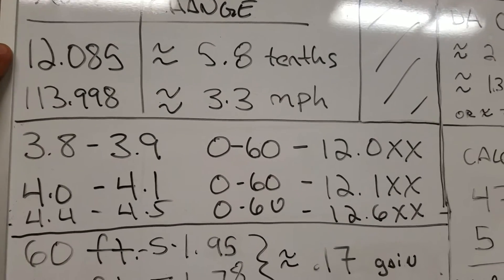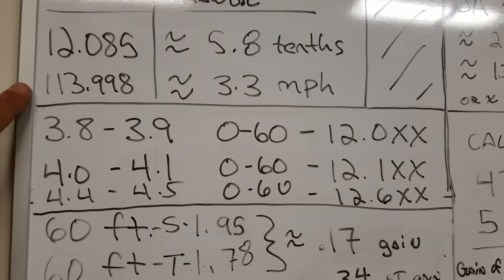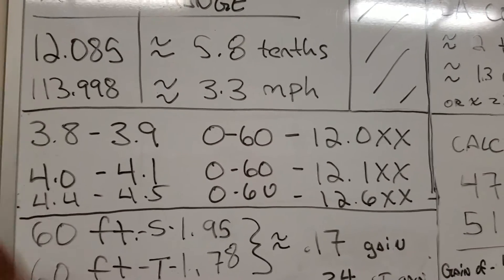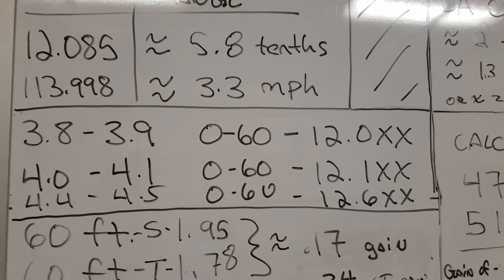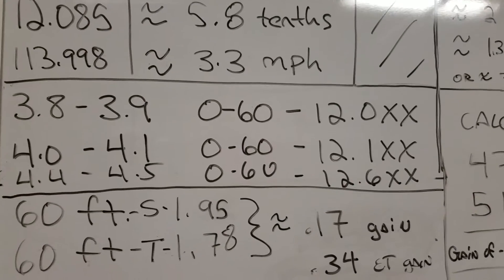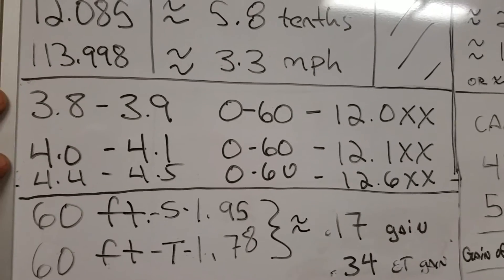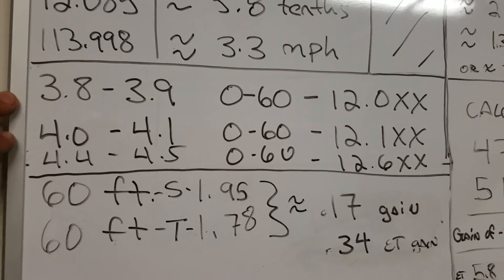Average 12.085 which is about a 5.8 tenth of a second improvement. 114 roughly miles an hour which represents about a 3.3 mile an hour average improvement over those other times. Now those are uncorrected and I'll get to the correction on that here in just a second.